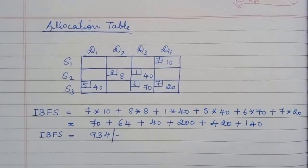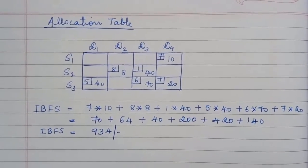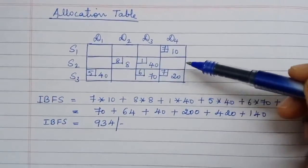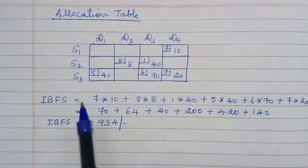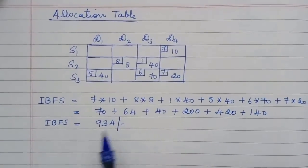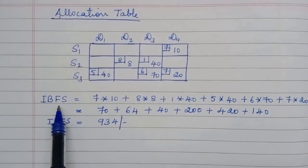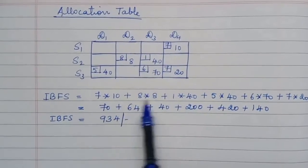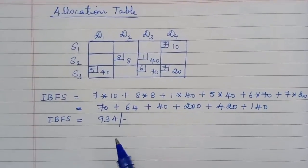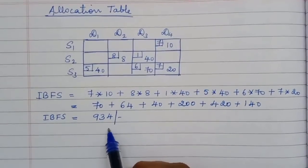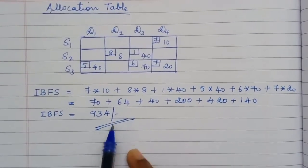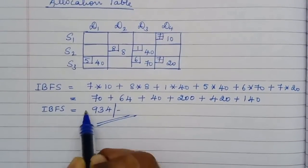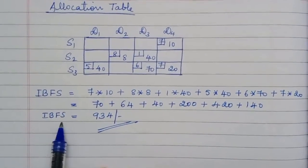After satisfying all supply and demand, I suggest writing down the allocation table so you don't miss any allocations. The initial basic feasible solution is calculated as allocation multiplied by cost for each cell. For this problem, the total cost is 934. If units are specified — for example, rupees — make sure to include the unit with your answer.